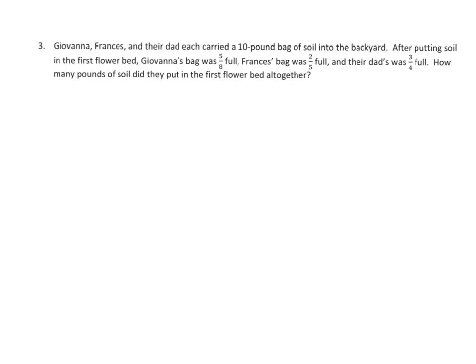In this problem, Giovanna, Francis, and their dad each carried a 10-pound bag of soil into the backyard. After putting soil in the first flower bed, Giovanna's bag was five-eighths full, Francis's bag was two-fifths full, and their dad's was three-quarters full. The question is how many pounds of soil did they put in the flower bed altogether? Pay attention — they're telling us how much is left in the bags, but the question asks how much was taken out, so it's the opposite.